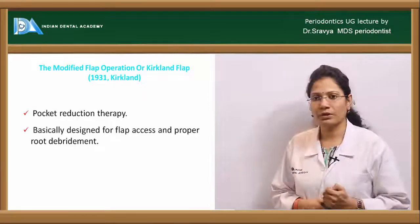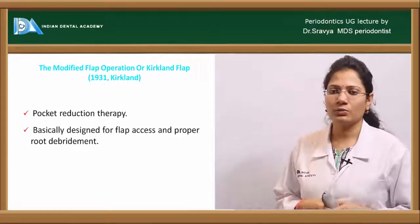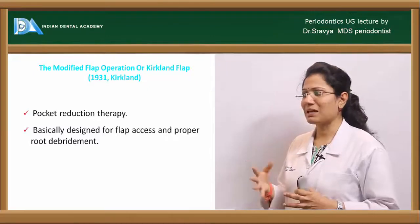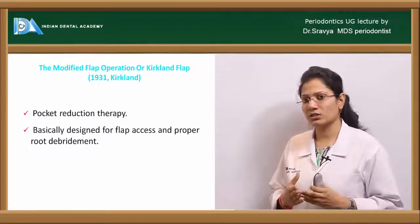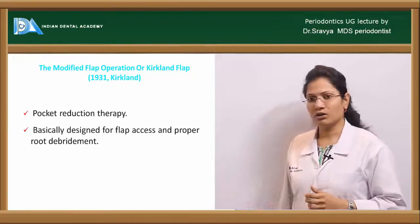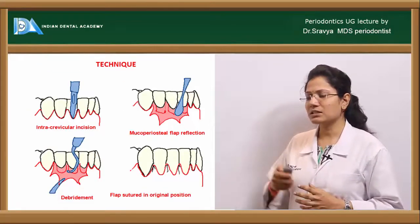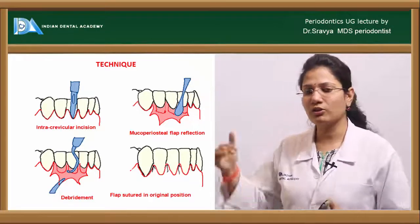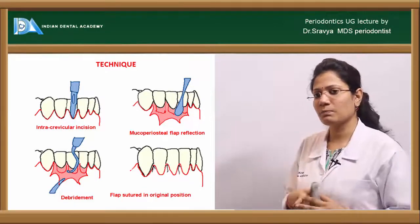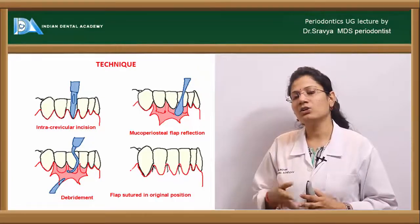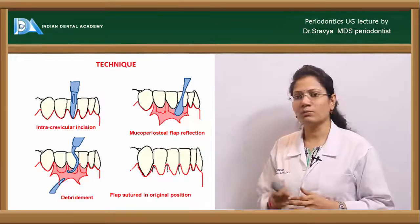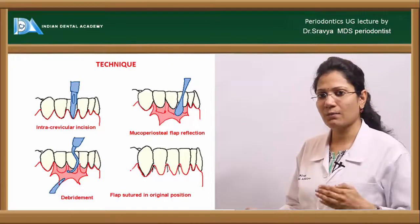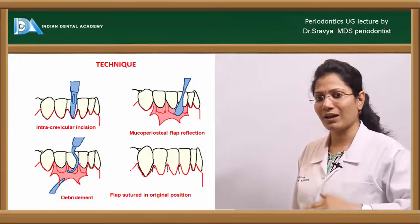The modified flap operation, or Kirkland flap, was given by Kirkland in about 1931. It is a pocket reduction therapy, basically designed to access the underlying root surfaces and alveolar bone. This technique involves a crevicular incision — placing the blade into the crevice and reaching the alveolar bone — then reflecting the mucoperiosteal flap, debriding the root surface, and closing the flap back at its original position.